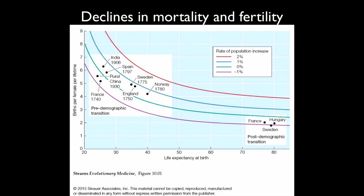You can see that births per female per lifetime dropped from about six down to less than two, and life expectancy at birth increased from somewhere between 25 and 40 years up to 75 to 80 years. That's a huge shift.